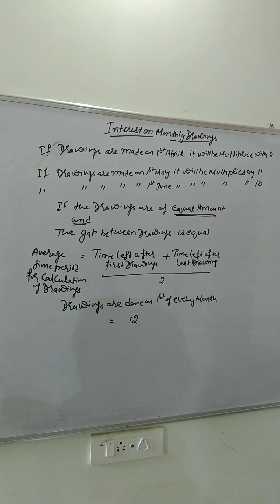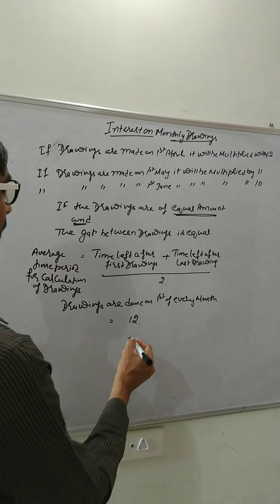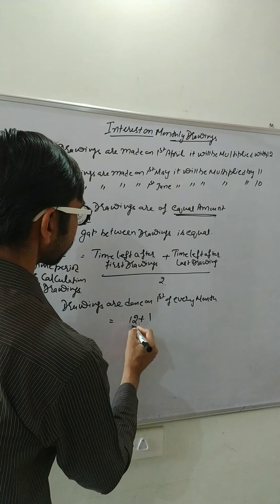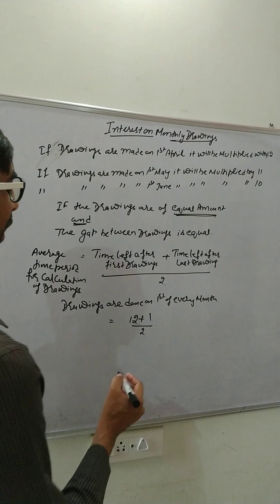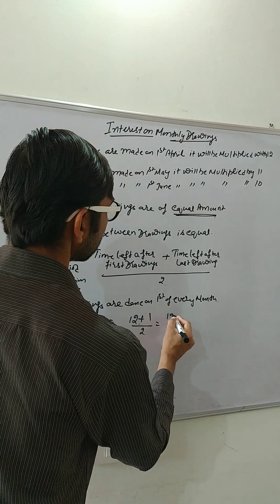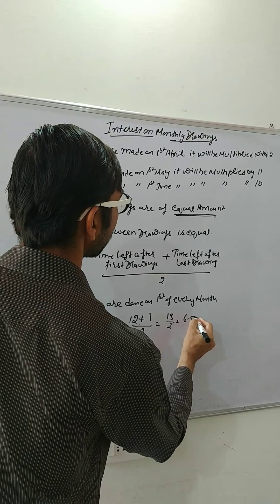And after last drawing, means first drawing was done on first of April. From first of April to 31st March, there are 12 months. And last drawing was done on first of March, so that is first of March, that means one month is left. So it is 12 plus 1 divided by 2. So that turns out to be 13 by 2 and 6.5.